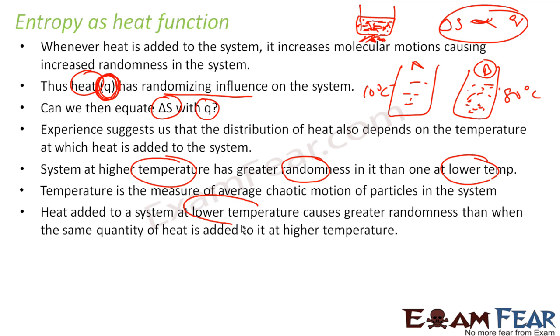But please pay attention here. Heat added to a system with lower temperature causes greater randomness than the same heat added to high temperature. This is fine, easy to understand: my system at high temperature will have more random molecules, low temperature fewer molecules. But if in both cases you add the same amount of heat, in this case the delta S, the change in entropy will be more. In this case the delta S will be less.